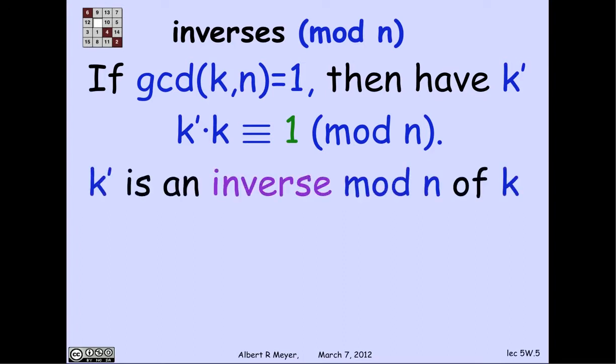So how are we going to prove this? And it's going to turn out to be an easy consequence of the fact that the GCD is a linear combination. So how am I going to find this k' that's an inverse of k? Well, remember, given the GCD of k and n is 1, I have a linear combination of k and n is 1. So s·k + t·n = 1.